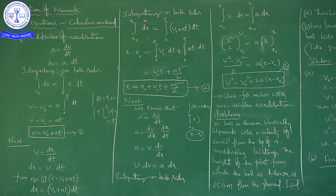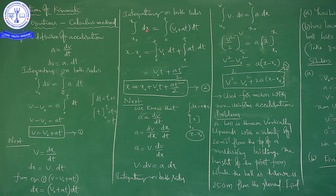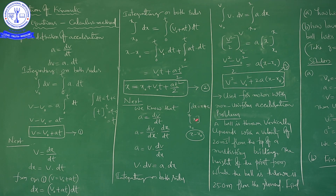Now we integrate on both sides and apply limits. When time is 0, displacement is x₀; when time is t, displacement is x. For the displacement side, the lower limit is x₀ and upper limit is x, so we integrate from x₀ to x dx on the left-hand side. On the right-hand side, the time limits are 0 to t. Integration dx equals x plus c; applying limits gives x minus x₀ on the left-hand side.